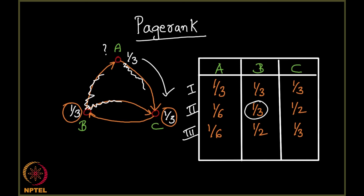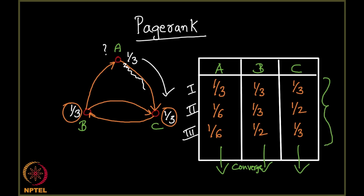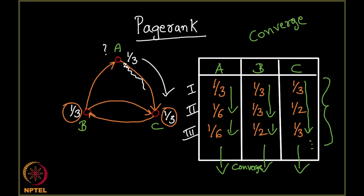My question is: if this process keeps continuing, where will it reach? Will it converge? Will the values keep changing randomly — 1/3 becoming 1/6, then 1/2, then 1/3 — or will it ever settle? Will it converge or keep producing random values? Let us try verifying what exactly happens in our next lecture.